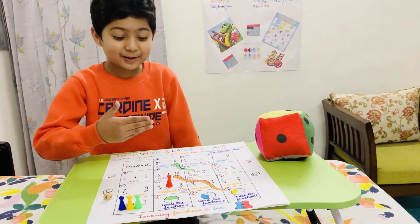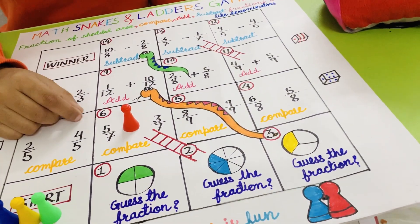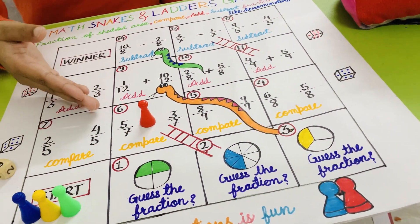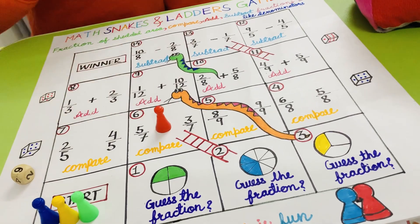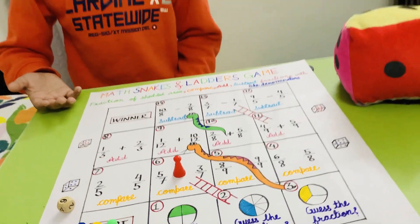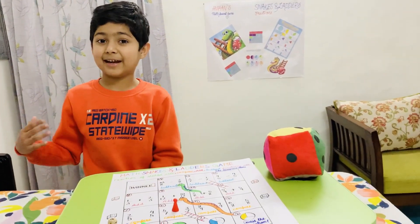So now my token is on number 6. I have to compare the fraction. 5 upon 7 is greater than 3 upon 7. So I got the correct answer. Now the next player can get his turn.